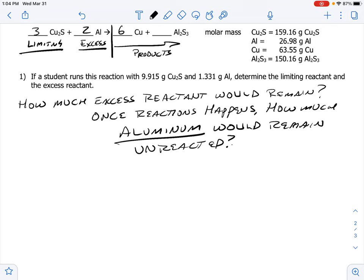We always start with our limiting reactant because it's our limiting reactant that determines how much of the excess reactant gets used. So I'm going to start off with 9.915 grams of the copper(I) sulfide and I'm going to convert it to moles. It's standard stoic, so 159.16 grams per one mole.